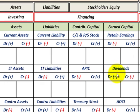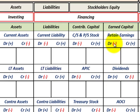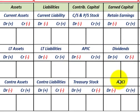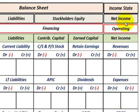Dividends is the contra account that reduces our earned capital — our retained earnings. For retained earnings: debit minus, credit plus. But for dividends: debit plus, credit minus. So if we increase dividends, that's a direct reduction to retained earnings. Rather than going in and debiting our retained earnings, if we identify the payment as dividends, we debit or increase our dividends account, which reduces our retained earnings. There can also be other comprehensive income, which works in the same direction as our normal accounts: debit minus, credit plus.